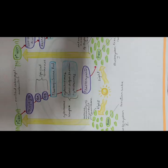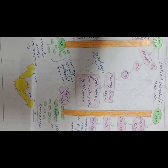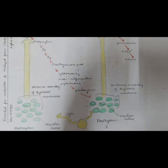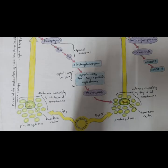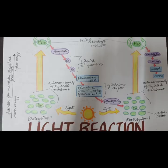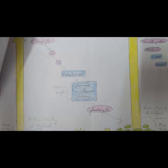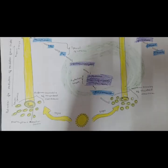The net effect of these steps is to convert light energy into chemical energy in the form of ATP and NADPH. The ATP and NADPH from light-dependent reactions are used to make sugars in the next stage of photosynthesis, the Calvin cycle.